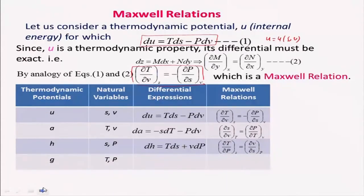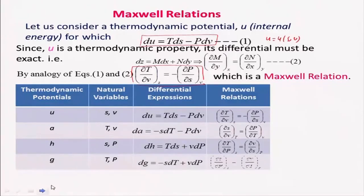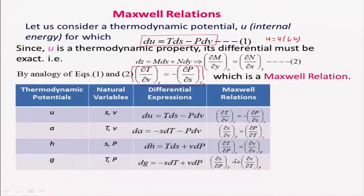Similarly, dG = −S dT + V dP, and from this we get ∂S/∂P|T = −∂V/∂T|P. So these four are basically the Maxwell relations, expressed in differential form.